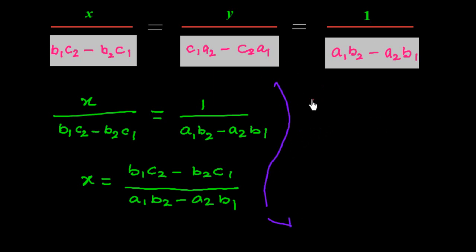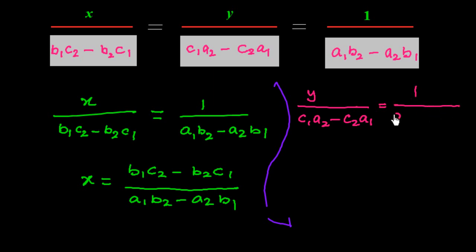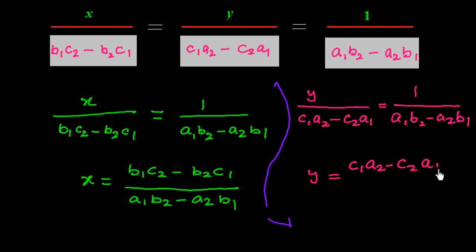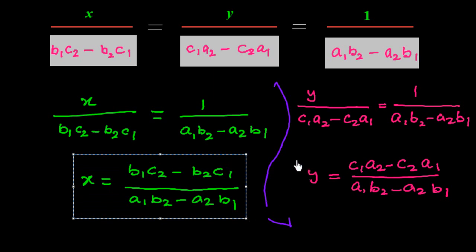Similarly, for y we know that y over (c1a2 minus c2a1) is equal to 1 over (a1b2 minus a2b1). Cross multiplying gives us: y is equal to (c1a2 minus c2a1) over (a1b2 minus a2b1). In this way, through cross multiplication, we have derived both formulae.